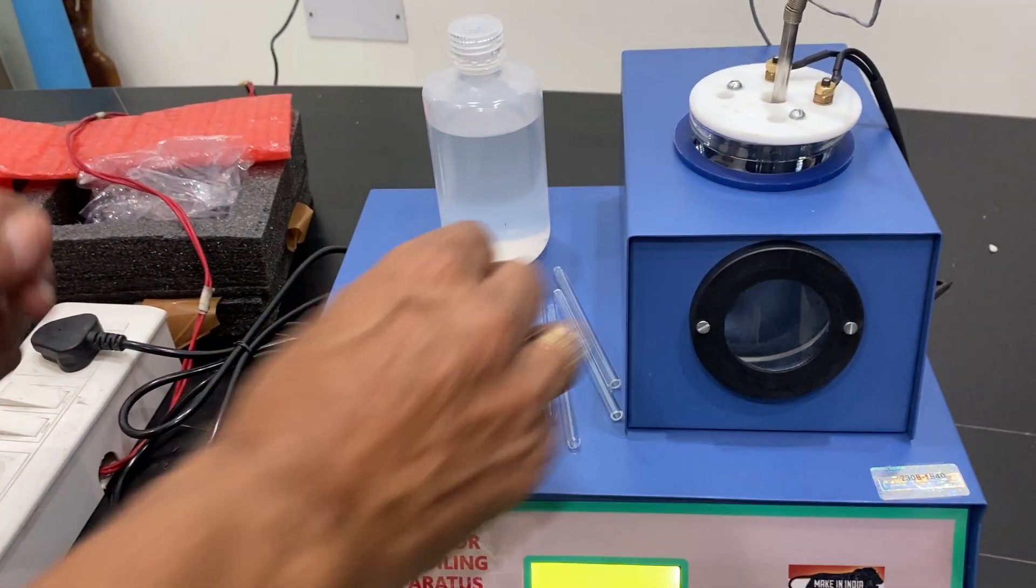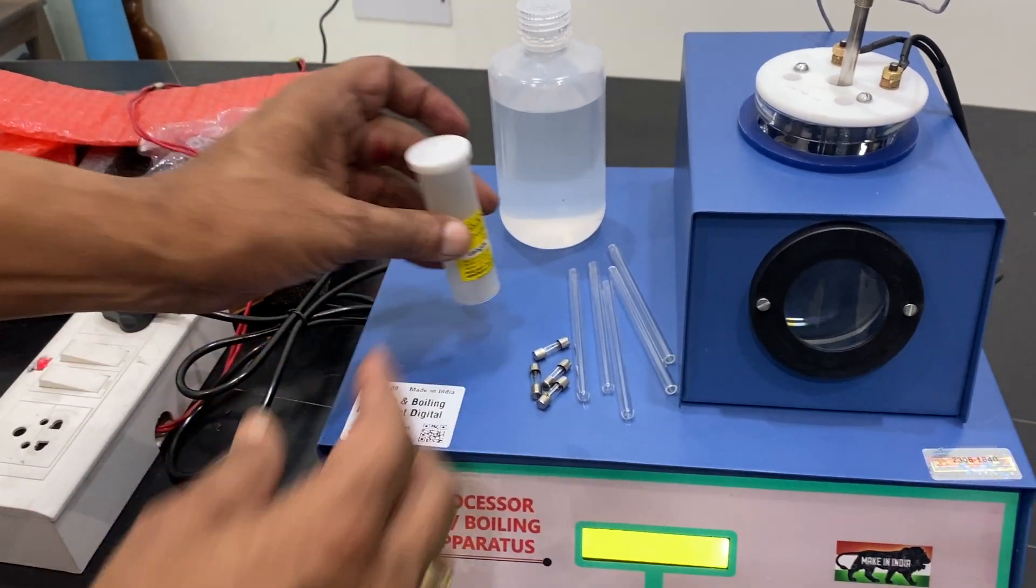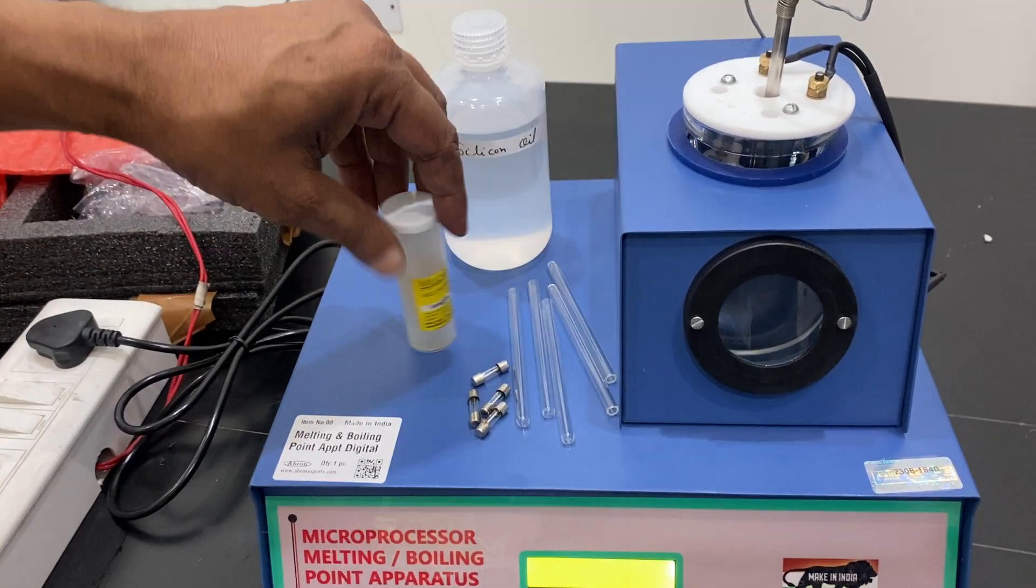This is the oil, silicon oil, capillary tubes, melting and boiling point tubes, and extra fuses.